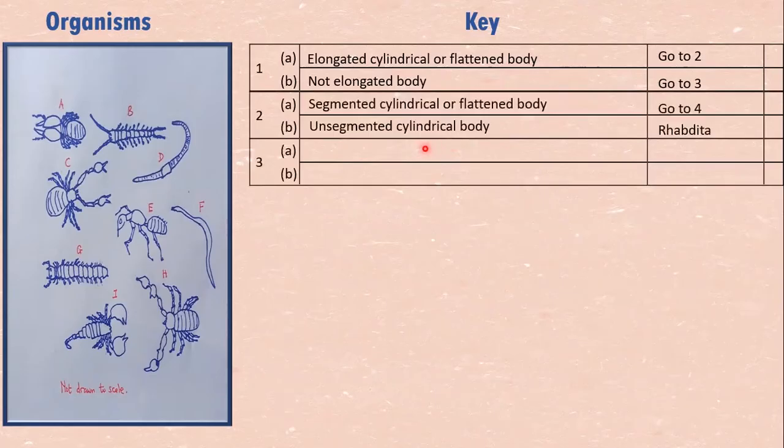So we will leave column three blank, and finish dealing with the elongated ones first. So we sorted out elongated and we are coming to here. Two, we have segmented, cylindrical, or flattened. We have to sort them out because the cylindrical should be in one box. Flattened should be in another box. But we have unsegmented and cylindrical here.